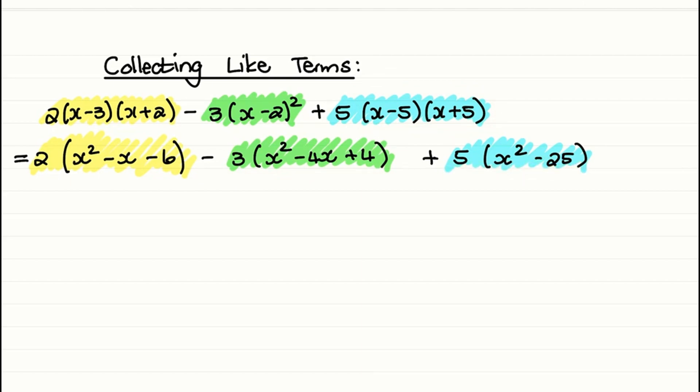Now what we can do is distribute each of the constant values or integers in front of the brackets into those brackets. So for the section highlighted in yellow, we will have 2x² - 2x - 12. And then in the section highlighted green, we have -3x² + 12x - 12.